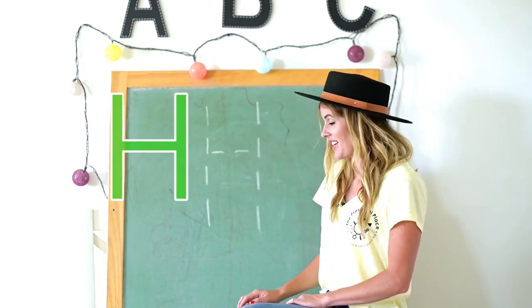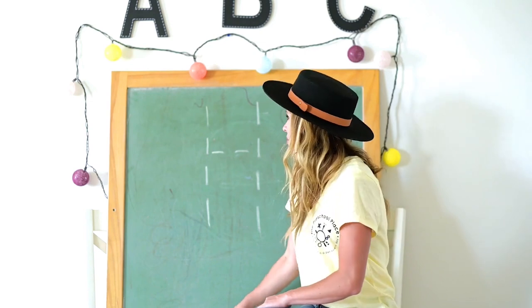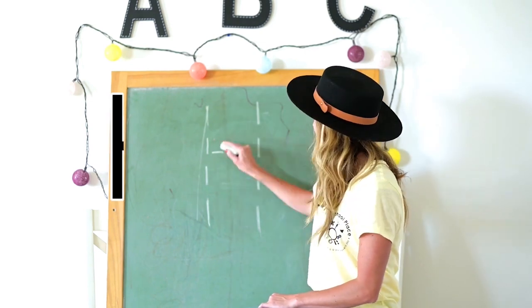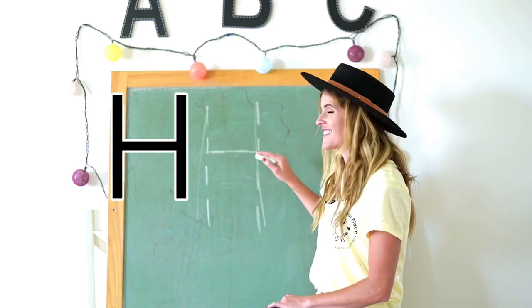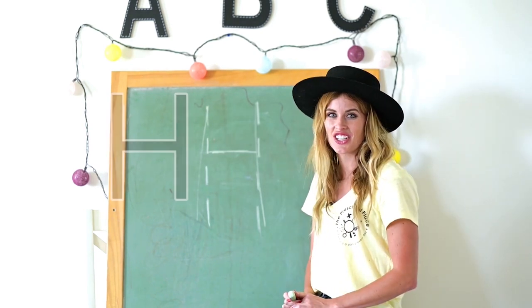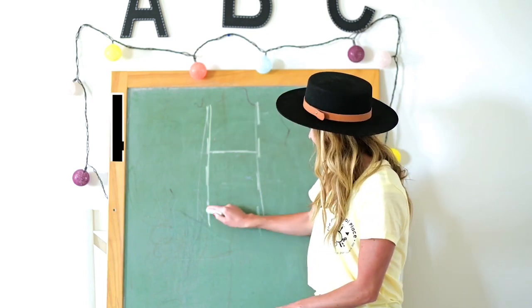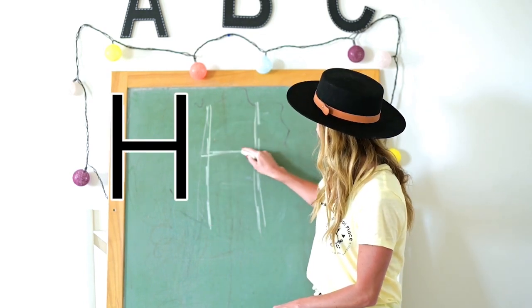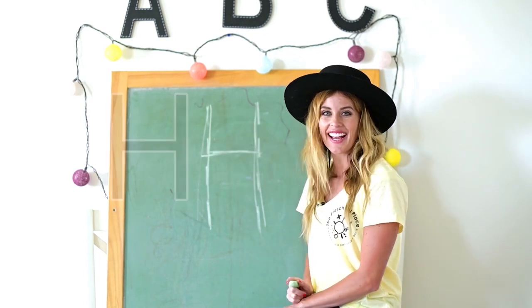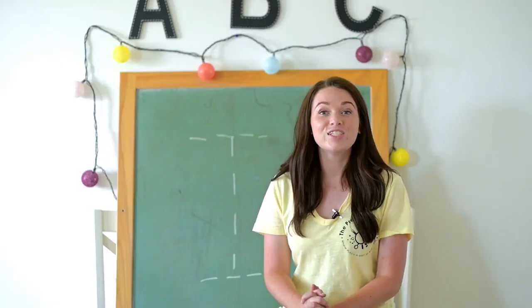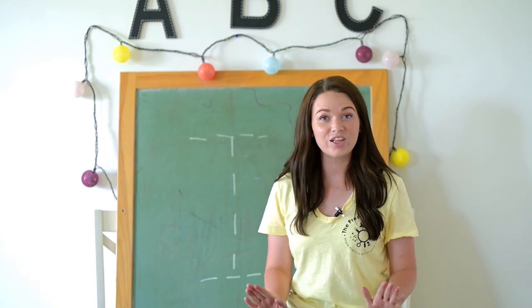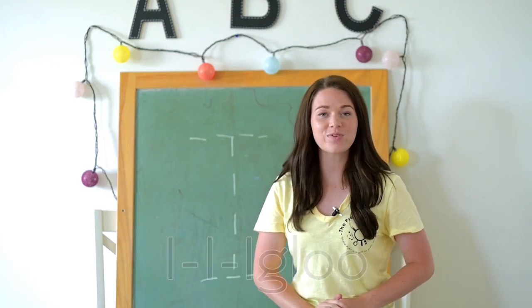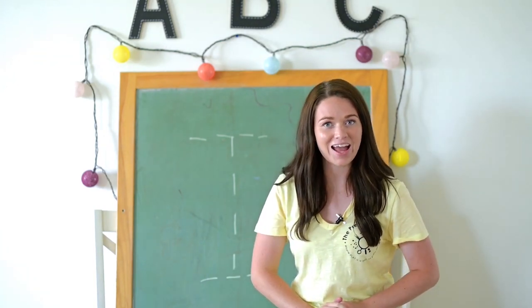Let's write it on the chalkboard: down, down, across H. Down, down, across H. So igloo starts with the letter I.